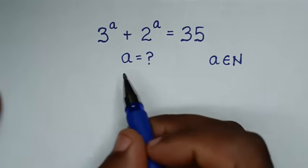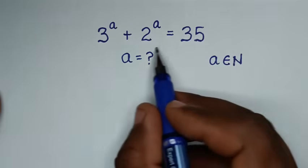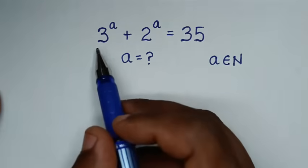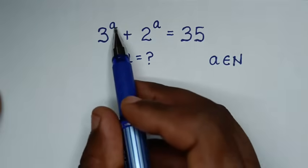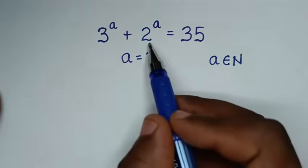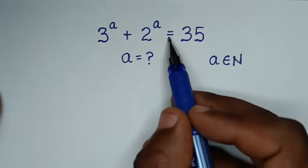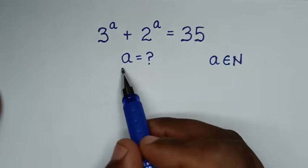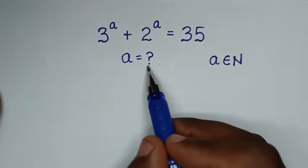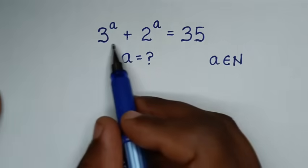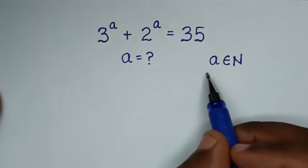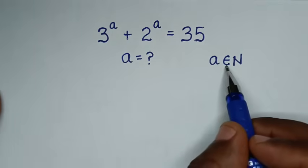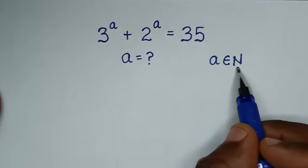Hello. How to solve this math problem, which is 3 power of a plus 2 power of a is equal to 35. To find the value of a from this equation, such that a is the element of a natural number.